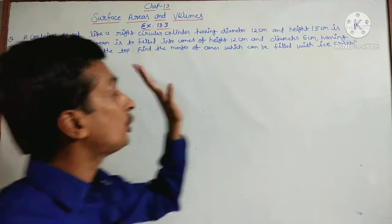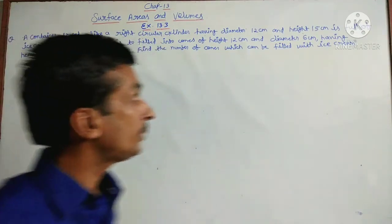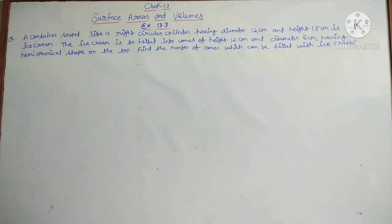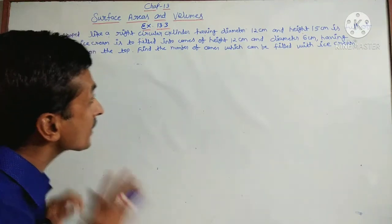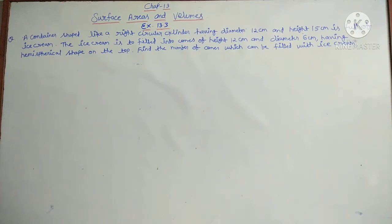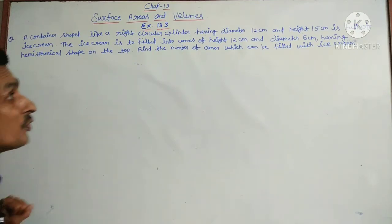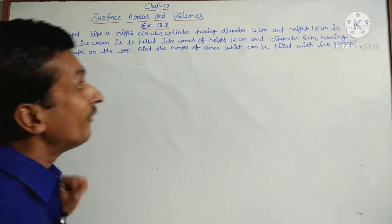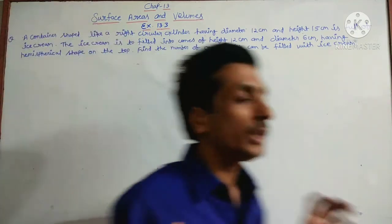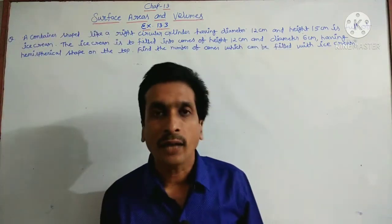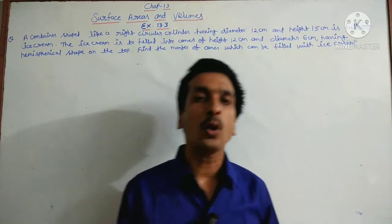A container shaped like a right circular cylinder having diameter 12 centimeter and height 15 centimeter is full of ice cream. The ice cream is to be filled into cones of height 12 centimeter and diameter 6 centimeter having hemispherical shape on the top. Find the number of cones which can be filled with ice cream.